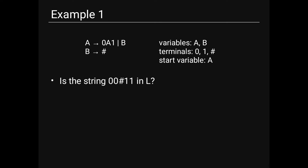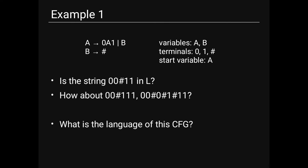Example 1: A → 0A1 | B, B → #. Variables: A, B. Terminals: 0, 1, #. Start variable: A. Is 00#11 in L? Yes. What about 00#111 or 00#0#11? No. The language of this CFG is L = {0^n # 1^n | n ≥ 0}.